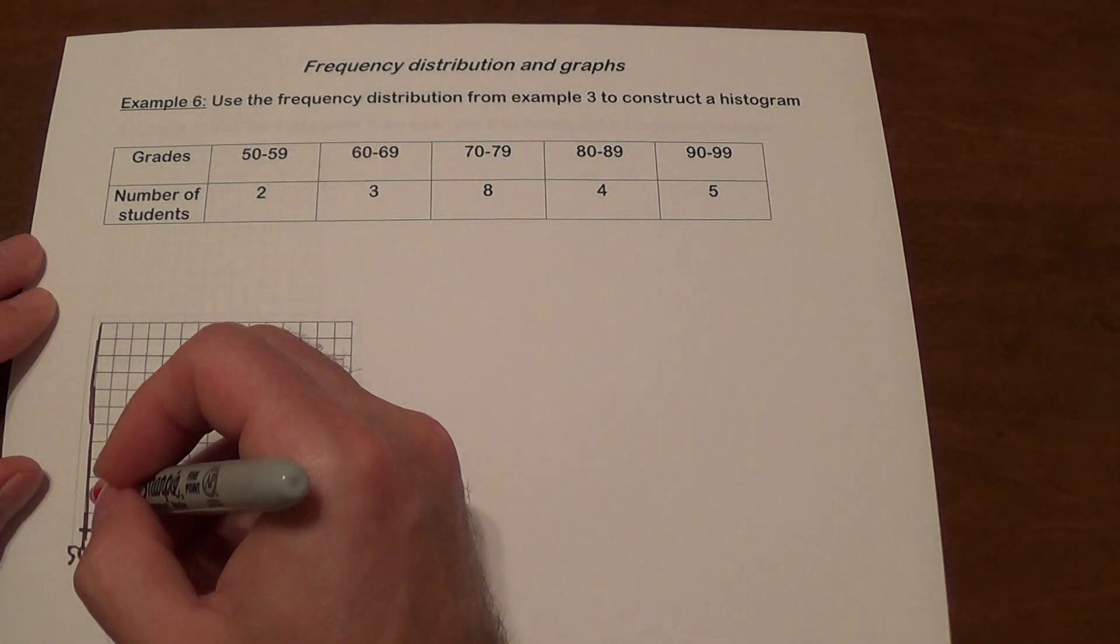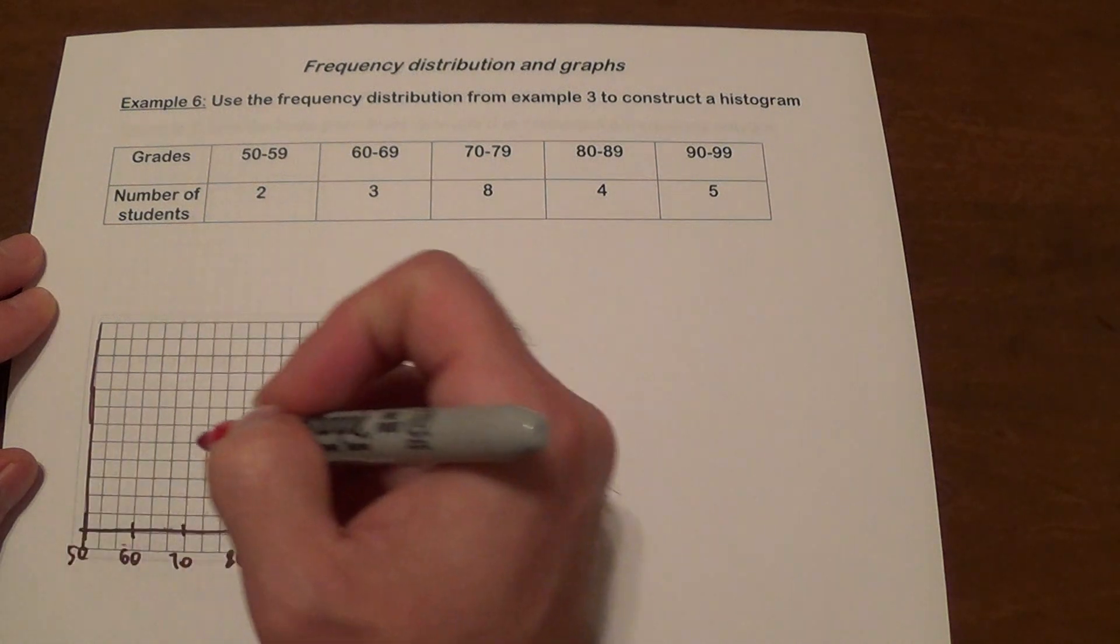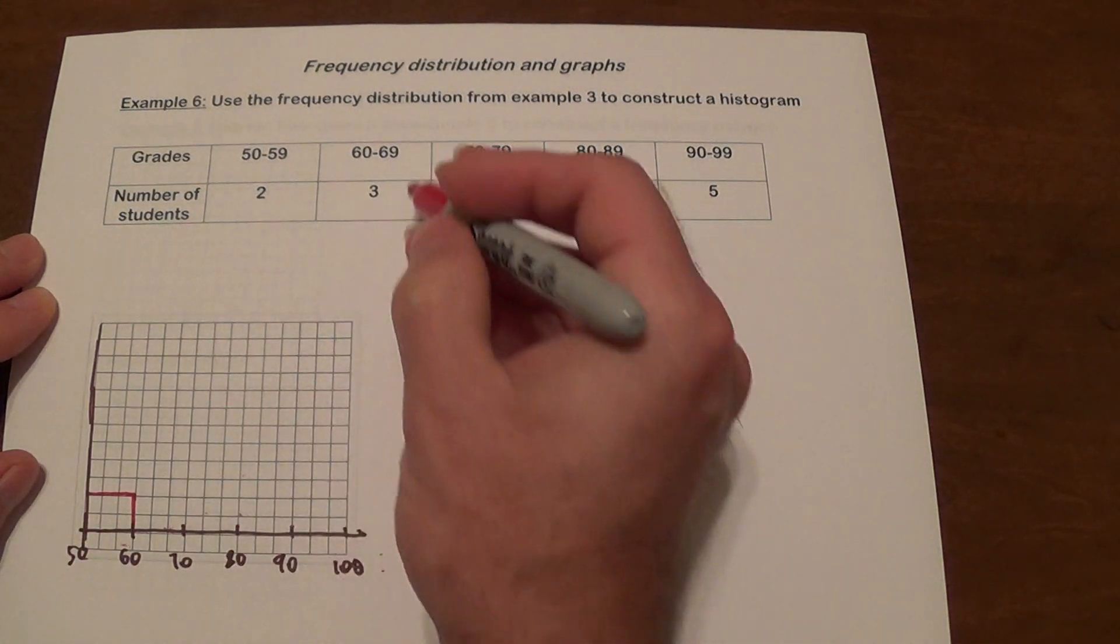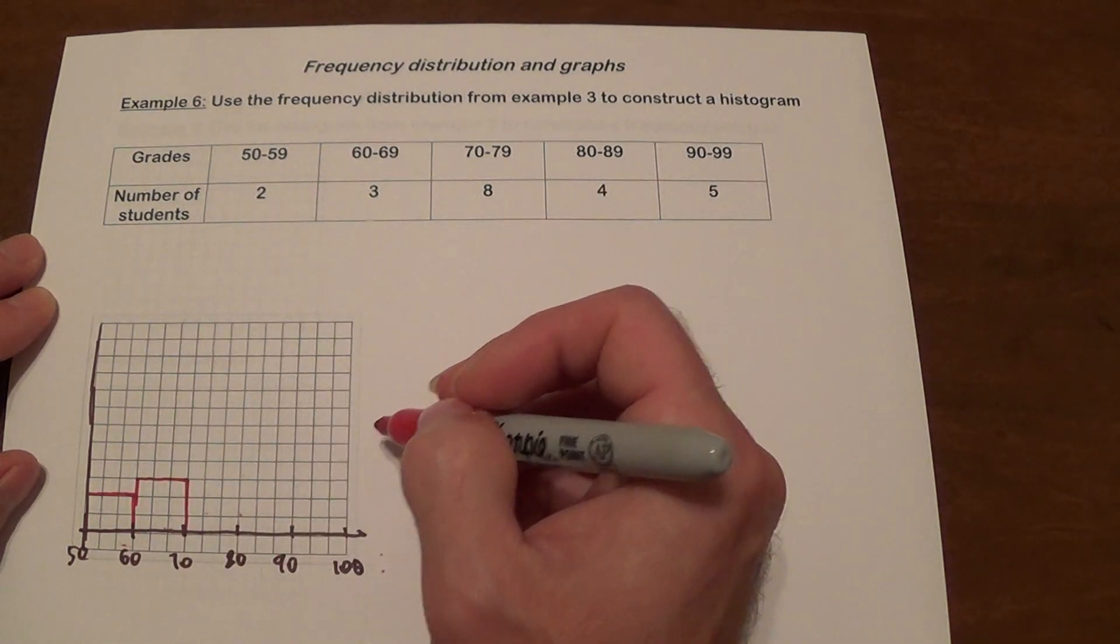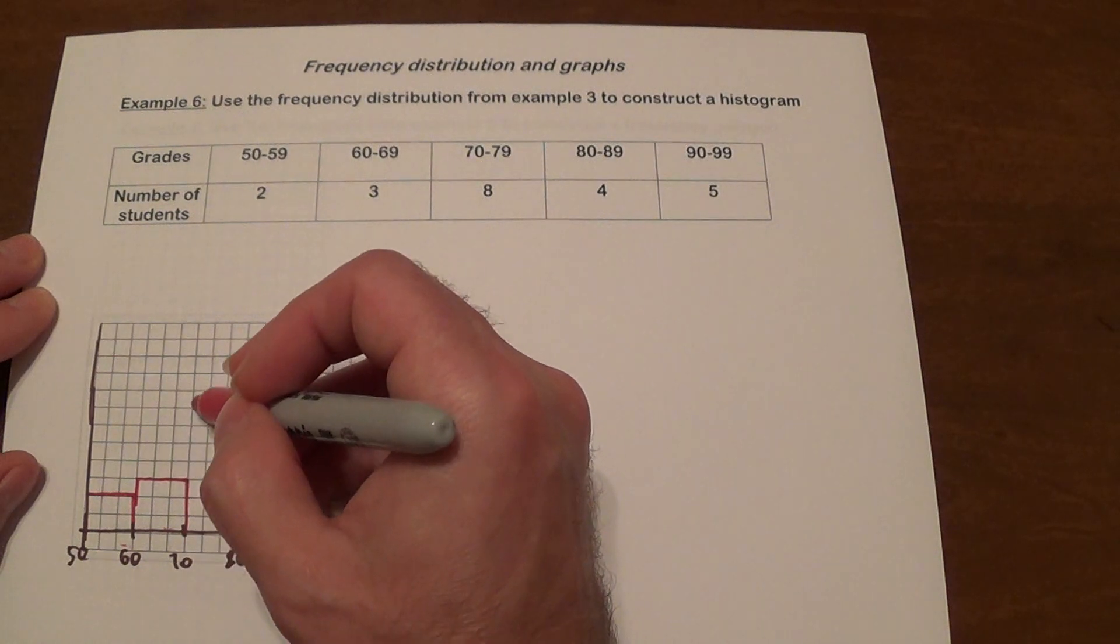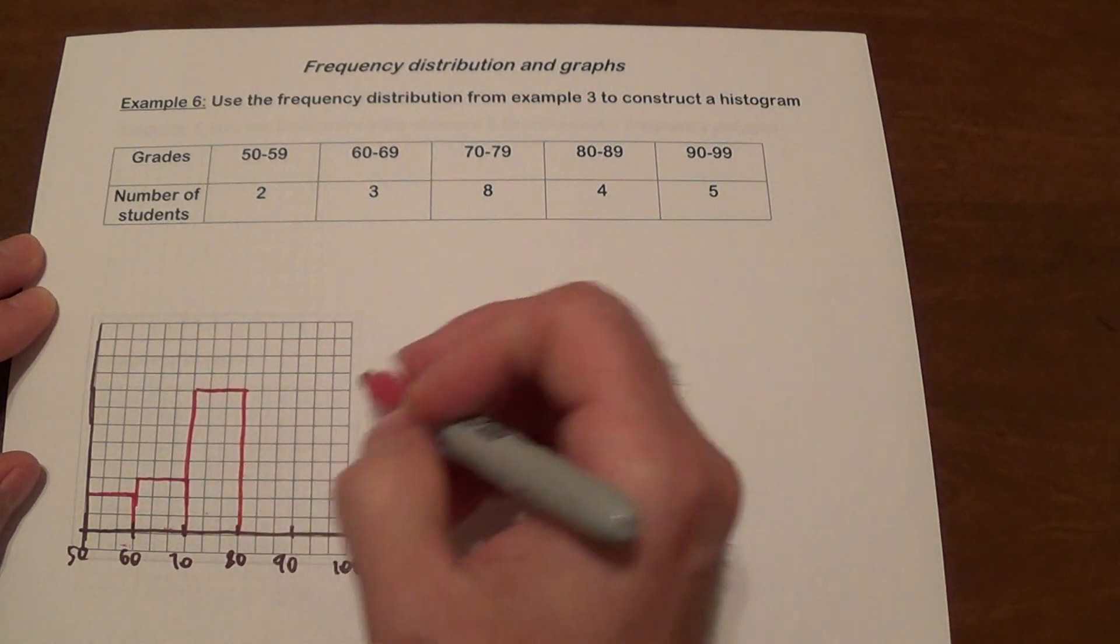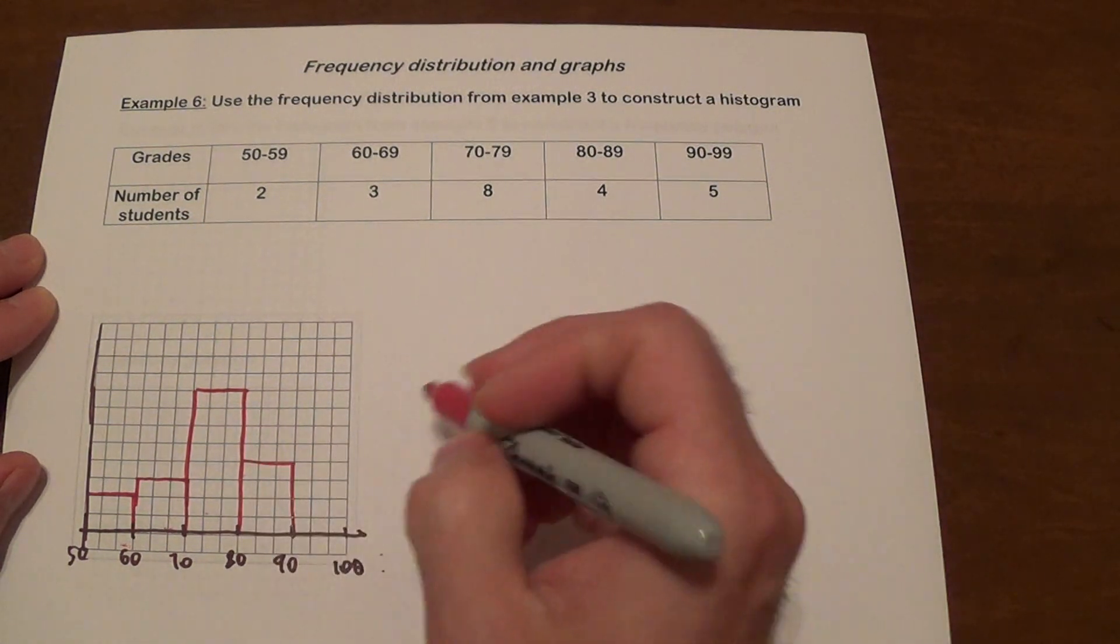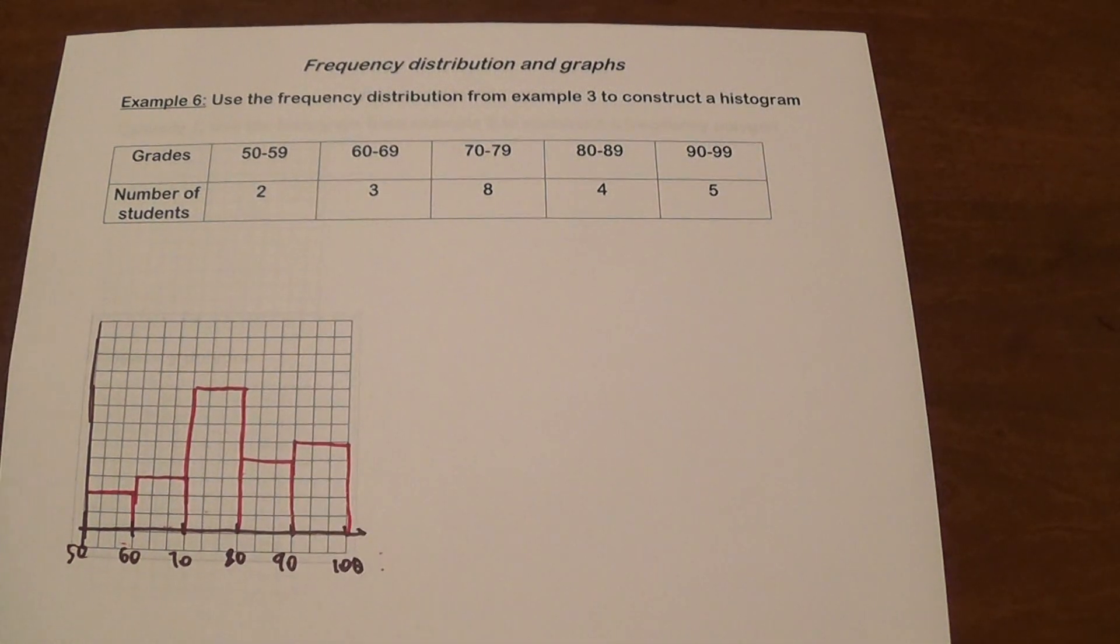So here we're going to have 2. So 2. From 60 to 69 we have 3. From 70 to 79 we have 8. From 80 to 89 we have 4. From 90 to 89 we have 5. And there is that one.